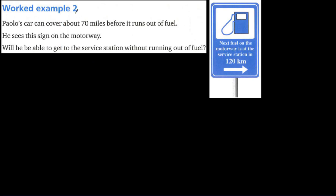In the second exercise, Paulo's car can cover about 70 miles before it runs out of fuel. There is a motorway sign showing 120 kilometers to the service station. We need to check whether 120 kilometers is greater or less than 70 miles, so we'll convert 120 kilometers to miles by dividing by 8 first.